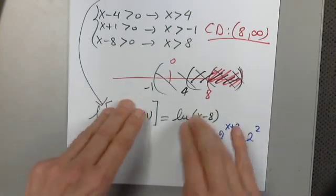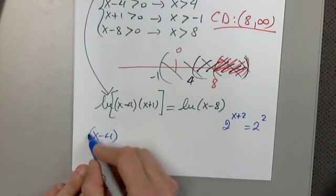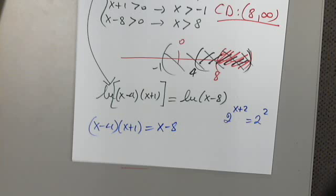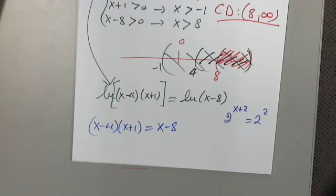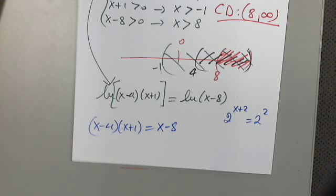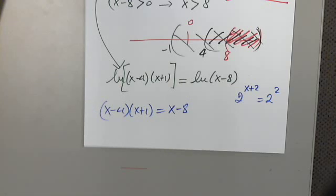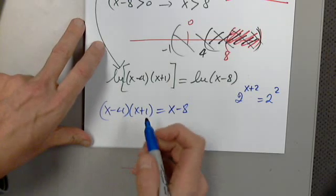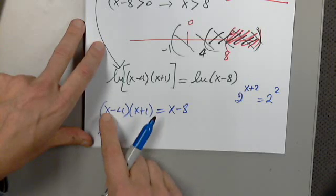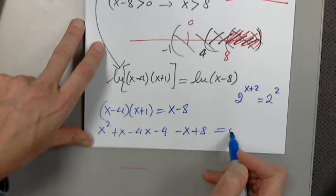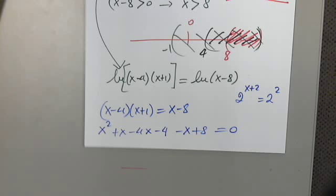So these two must be equal to each other. So then x minus 4 times x plus 1 must equal x minus 8. Only because we did not need to change it into an exponential equation because both sides had the same base, if you want, like here. Good. Now what type of equation is it? Yes, it's quadratic because I have to square. I mean, I have to distribute x squared plus x minus 4x minus 4 minus x plus 8 equals 0, because I know that when I solve quadratic equations like this one, for example, I have to have 0 on one side. Any questions so far?